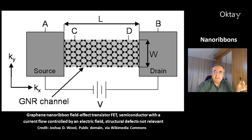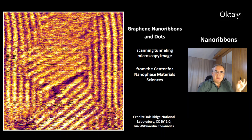This is one application of graphene nanoribbons as a field effect transistor (FET) — a semiconductor with a current flow controlled by an electric field. For this application, structural defects are not relevant. This scanning tunneling microscopy image from the Center for Nanophase Materials Science shows graphene nanoribbons and dots.